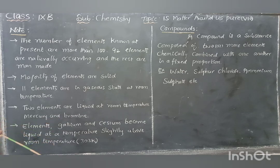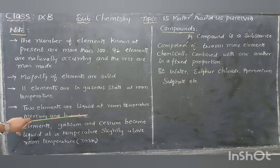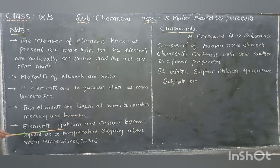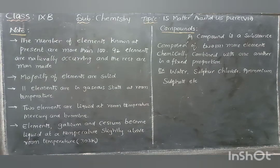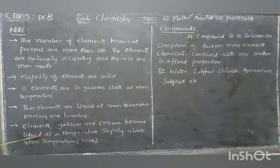Mercury and bromine are the two elements that are liquid at room temperature — very important. Additionally, the elements gallium and caesium become liquid slightly above room temperature.